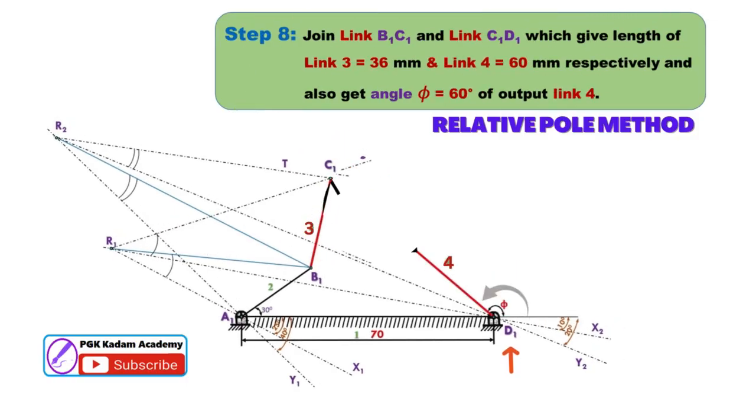Step 8: Join link B1C1 and link C1D1, which give length of link 3 equal to 36 mm and link 4 equal to 60 mm respectively. And also measure output angle equal to 60 degrees of output link 4.